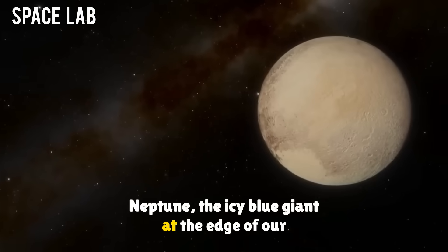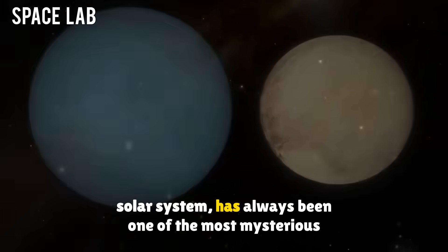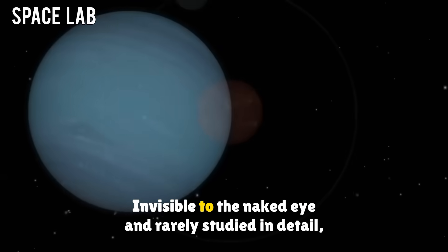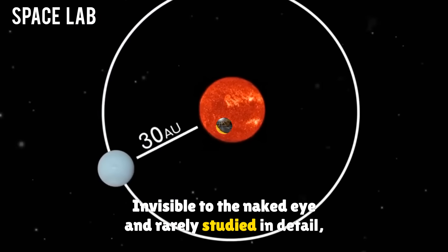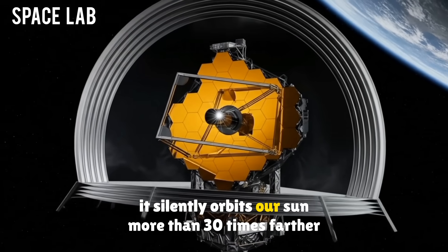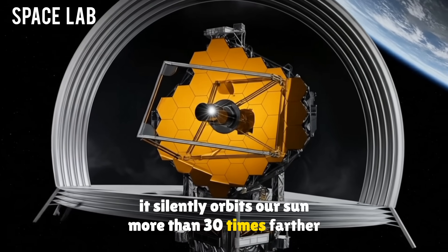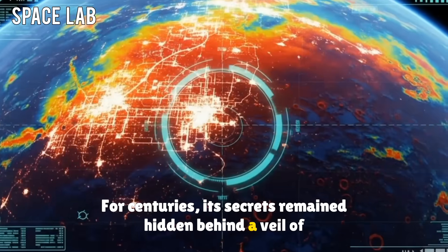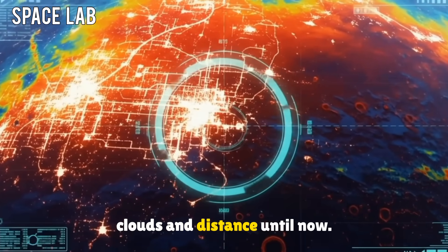Neptune, the icy blue giant at the edge of our solar system, has always been one of the most mysterious planets. Invisible to the naked eye and rarely studied in detail, it silently orbits our sun more than 30 times farther out than Earth. For centuries, its secrets remained hidden behind a veil of clouds and distance, until now.